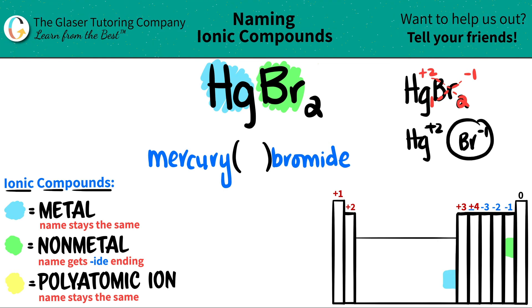So if this checks out, that means that this charge checks out. So mercury is a two. So I just got to put a two charge in here and call it a day. So HgBr2 is mercury two bromide and that's it.